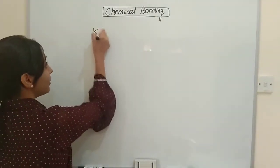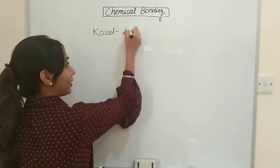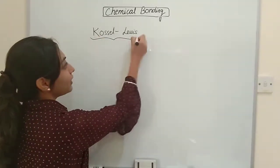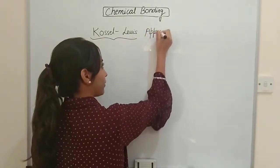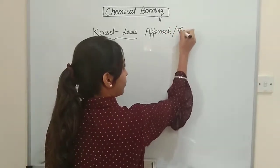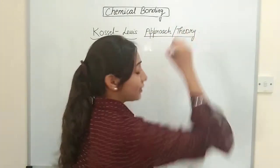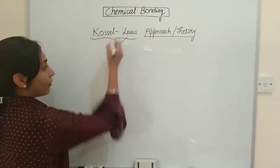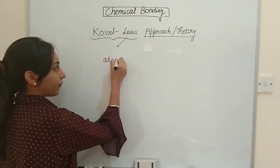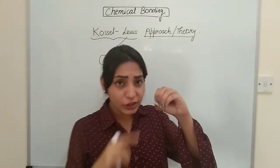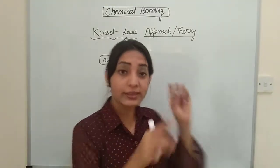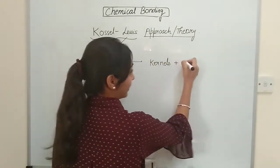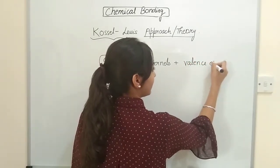This was proved by so many scientists and we will be studying theories given by different scientists. The first two persons who gave the theory about bonding between atoms were Cossel and Lewis, and they gave the Cossel-Lewis approach or Cossel-Lewis theory about atoms.